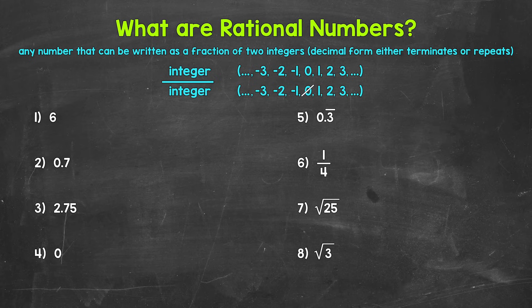Fractions can be written as decimals. So anything in decimal form that either terminates — so cuts off — or repeats, meaning it continues on forever in some type of pattern, those are rational numbers.